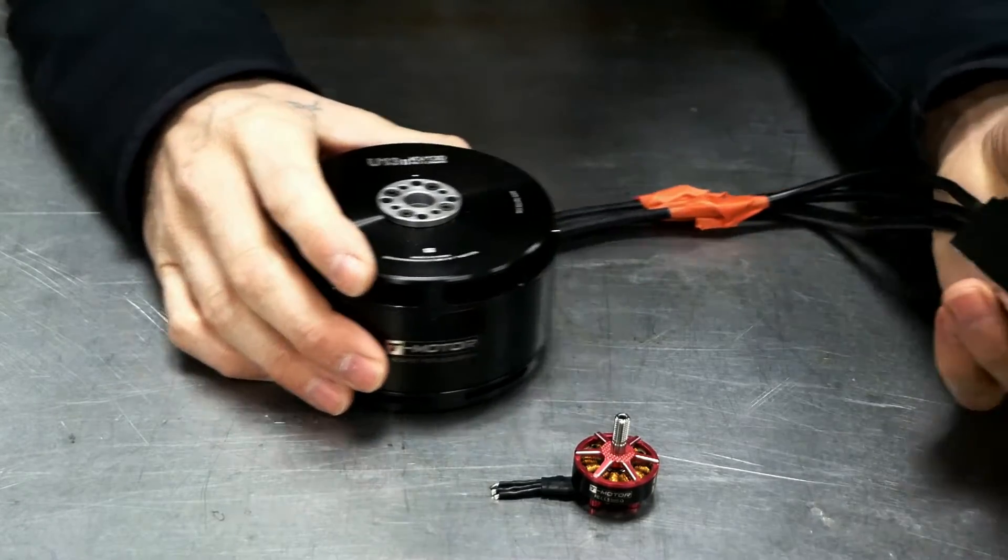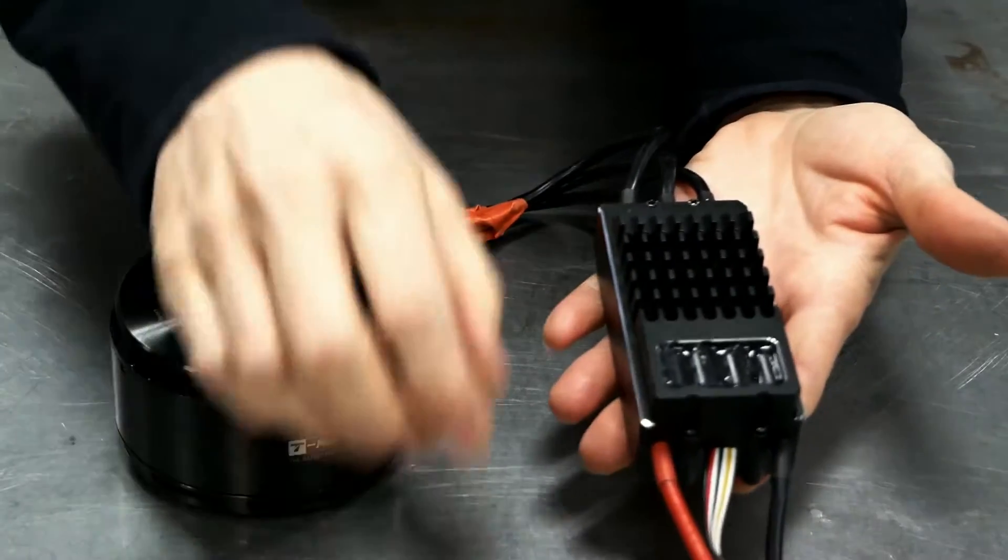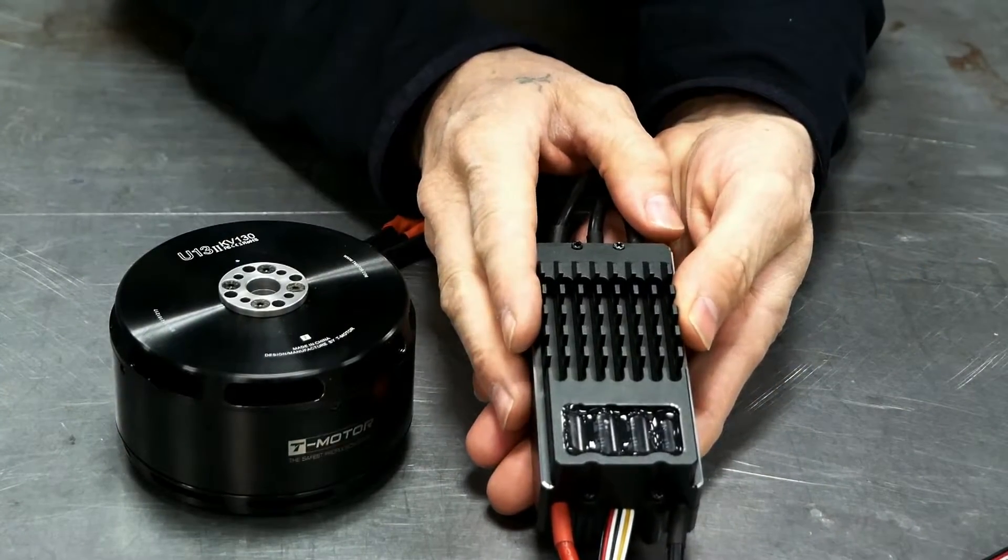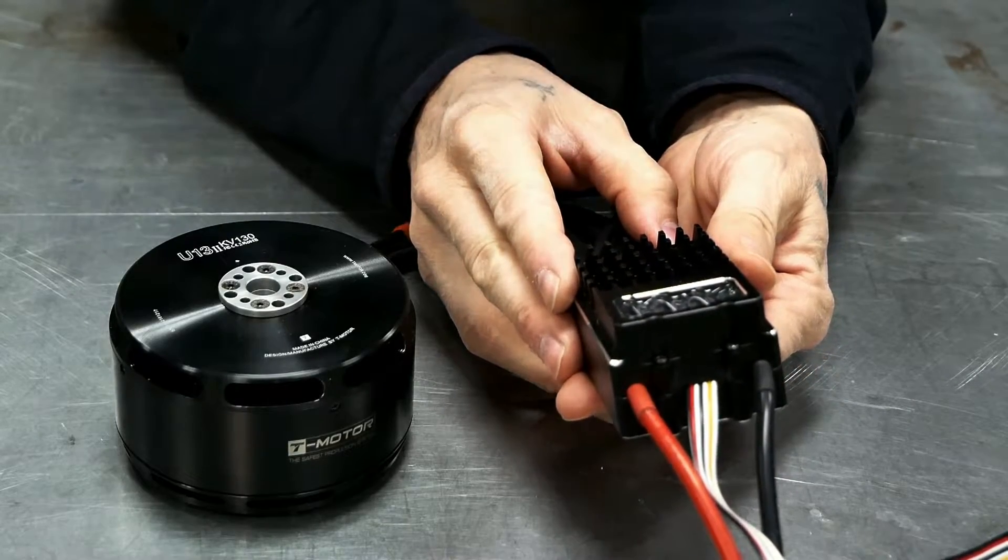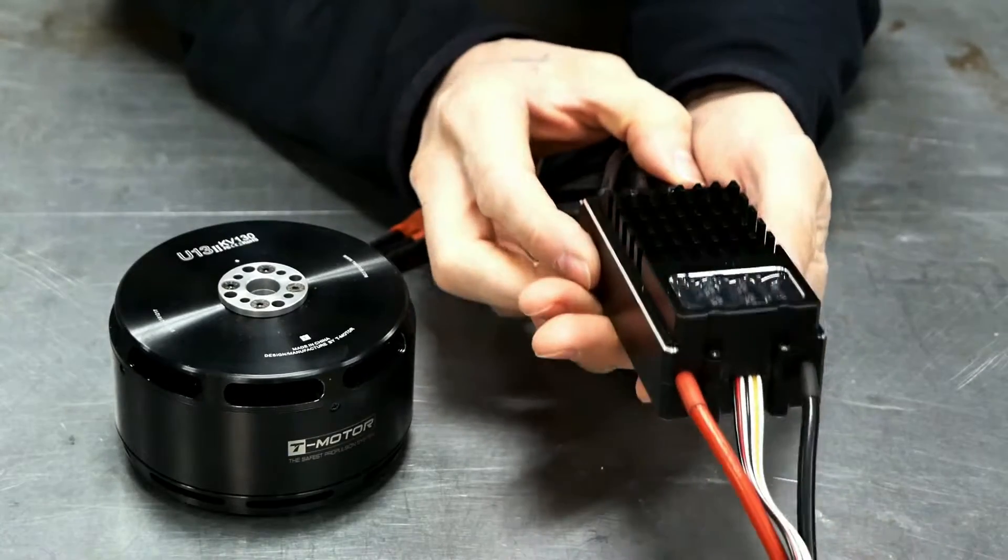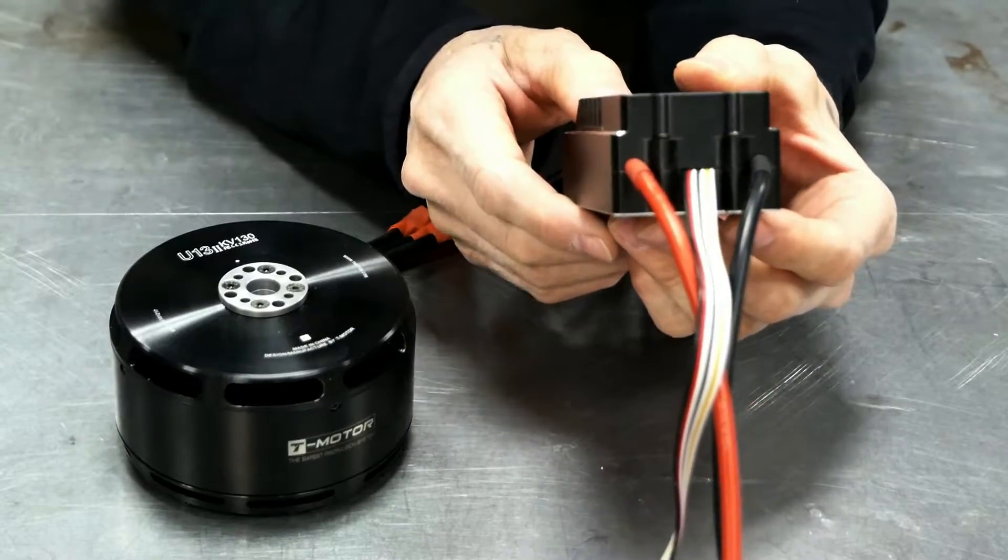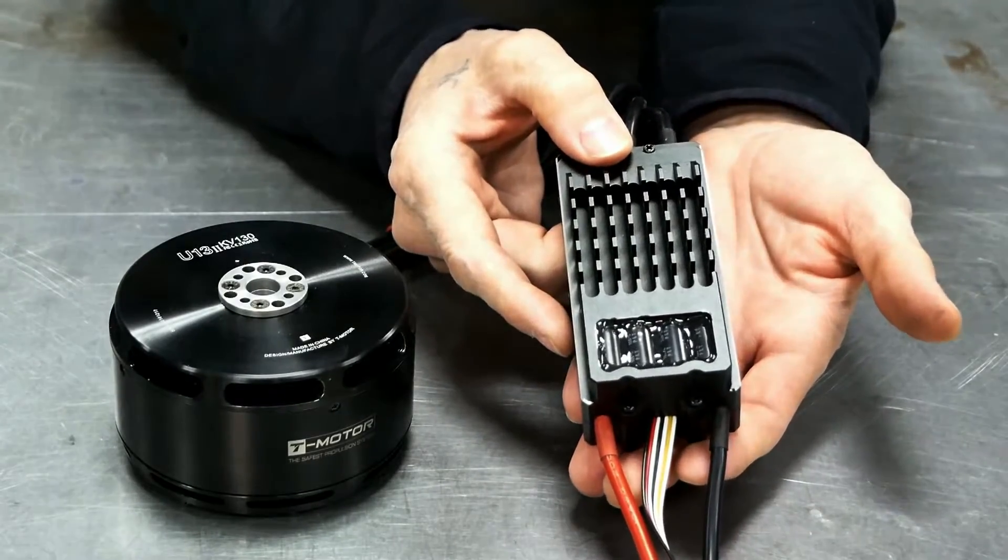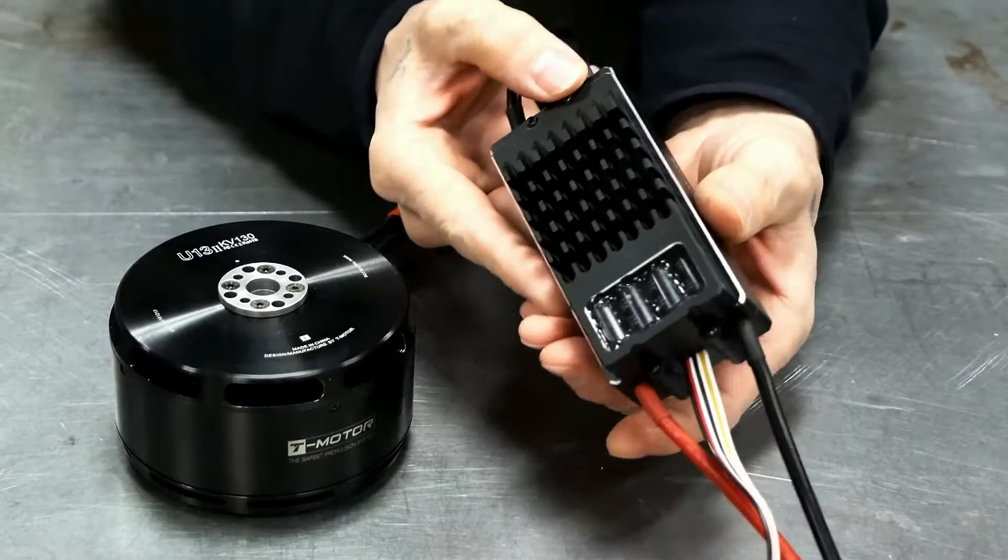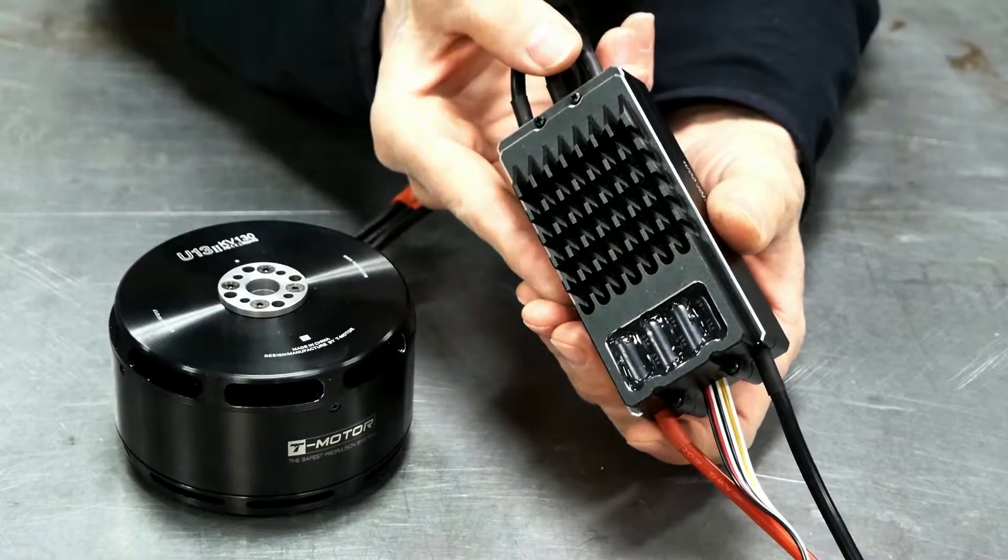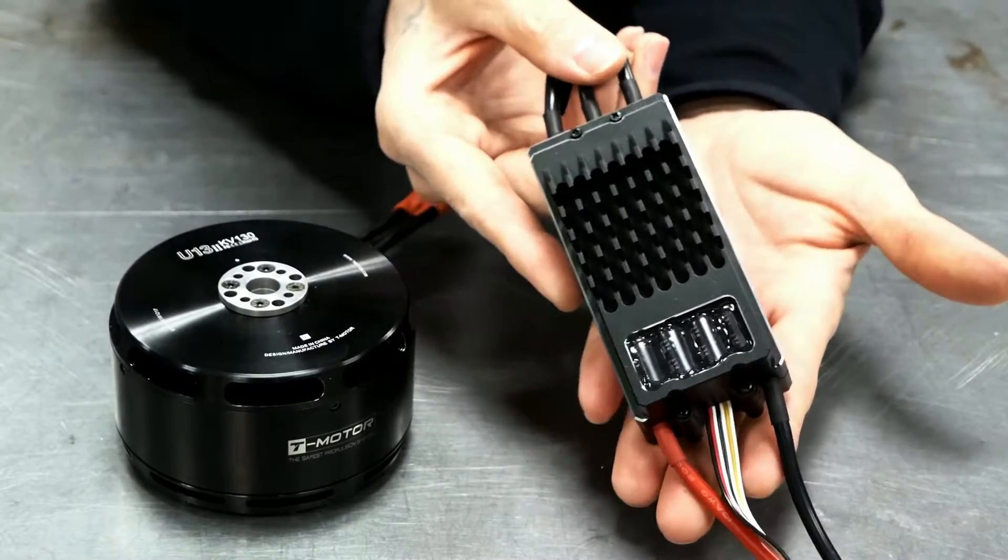The problem today that I want to address is this right here, the Flame 180, a 180 amp ESC, and it has no documentation. If you call them, if you email them, T-Motor will say of course we do, it's on the website. If you go to the website, you get some specs and that's about it.